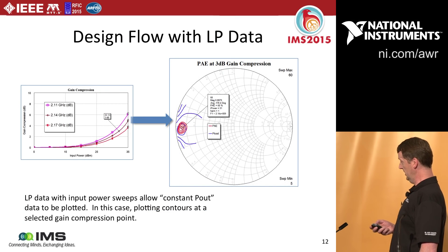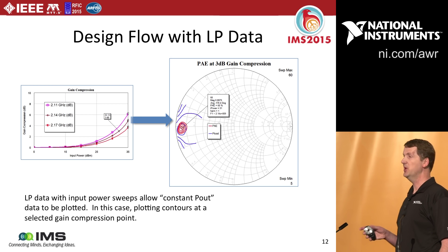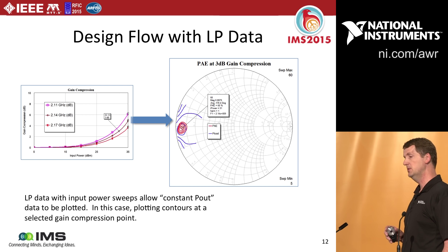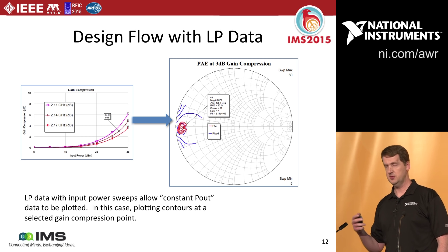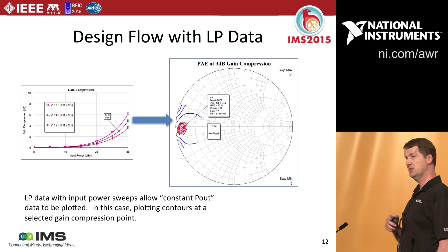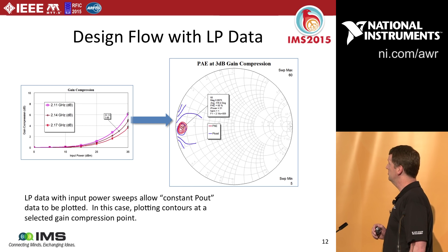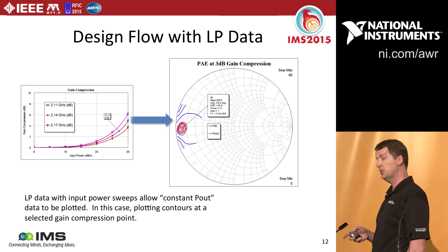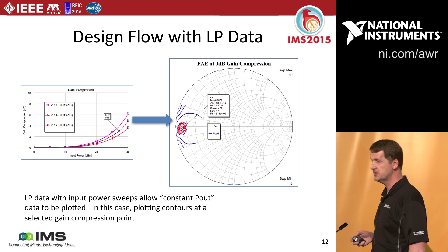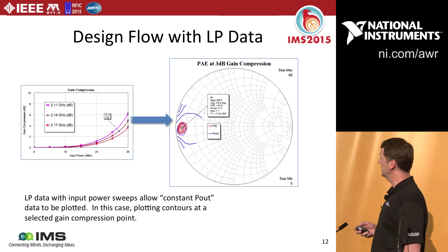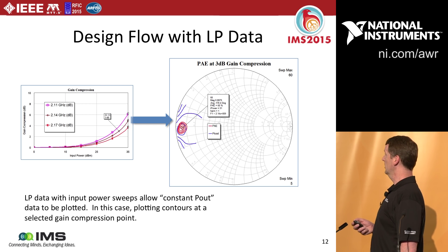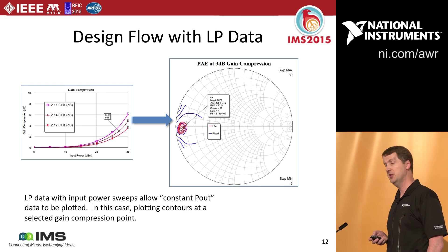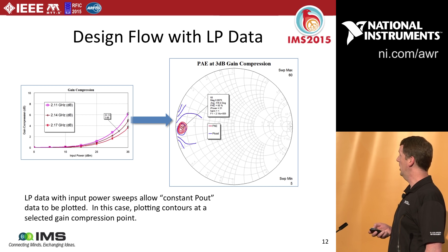Just because we're sweeping input power doesn't mean you're constrained to make measurements based on input power. If you're interested in designing in terms of output power, you don't have to have your load pull system servo to specific output power levels. You can take input power sweeps and then use the capability in our software to pick an output power-based point and plot data from there — for instance, picking the 3 dB compression point at 2.14 GHz and plotting PAE and output power capability contours.